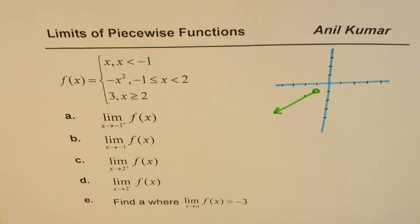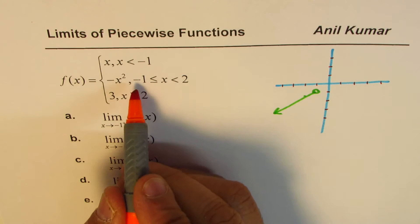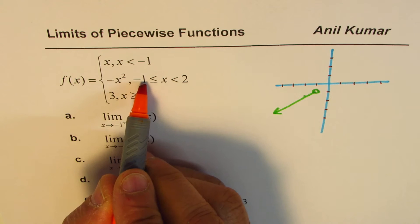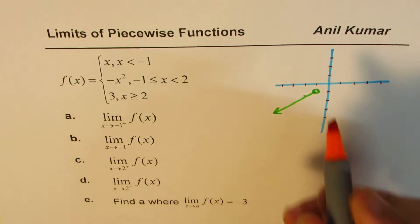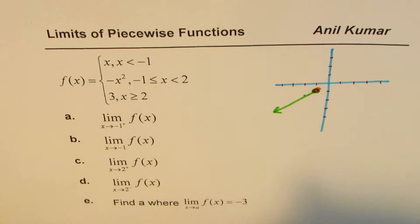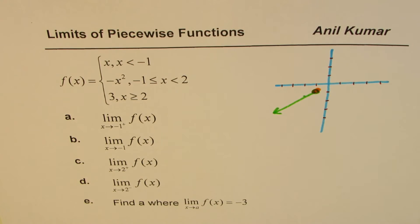Now, let's look into the second piece, which is a quadratic function x² reflected on y-axis. Now, -1 is included here. So if I write -1, -1² is +1, minus of that is negative. So this fills up this space, right? It fills up this one. So it is continuous at -1. Do you appreciate it?